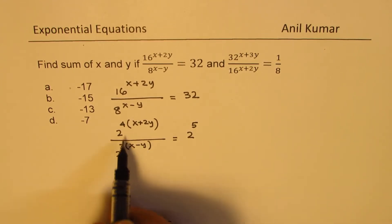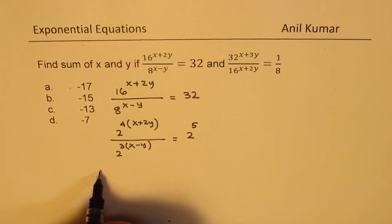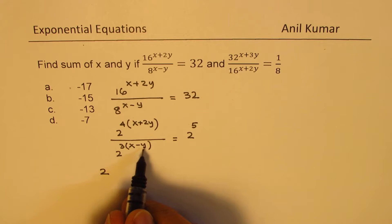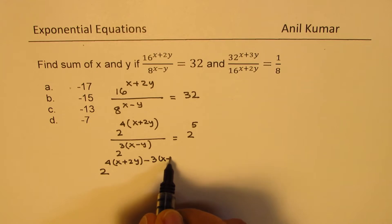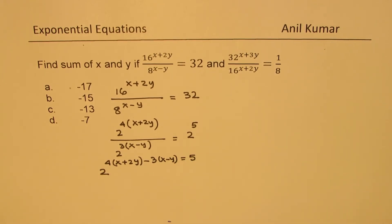Now combining the terms with common base, we get 2 to the power of 4 times x plus 2y minus 3 times x minus y equals 2 to the power of 5. So we can equate the exponents and get one equation from here.